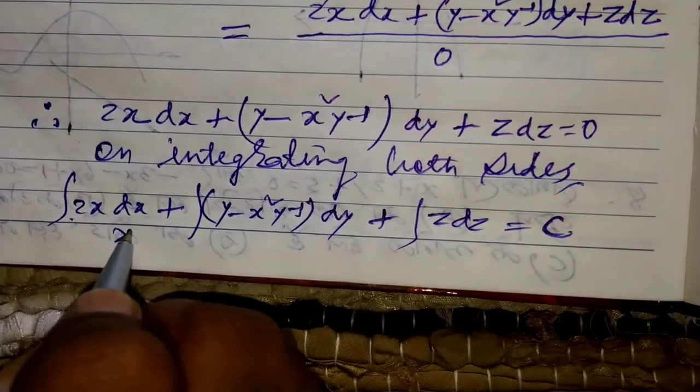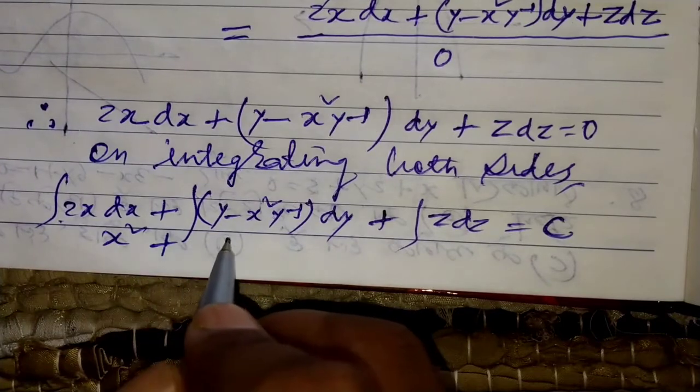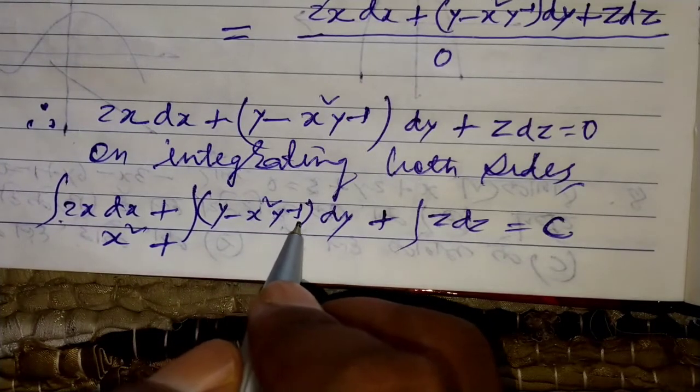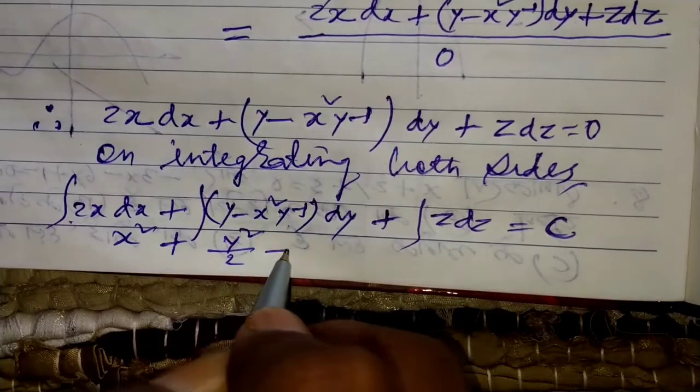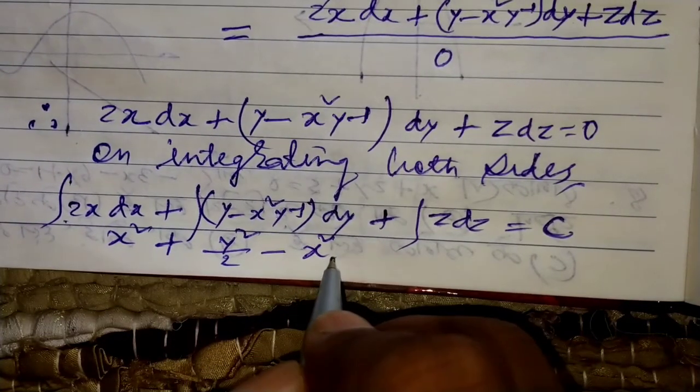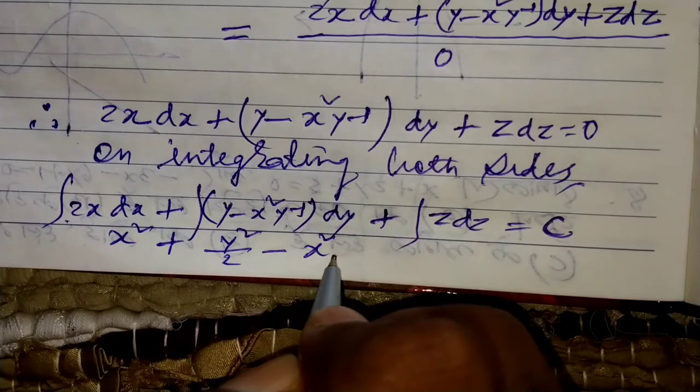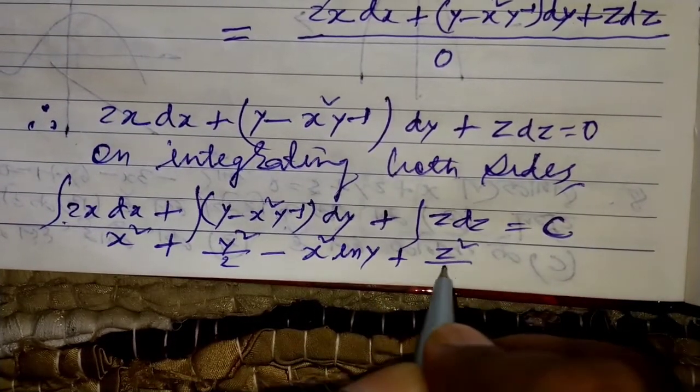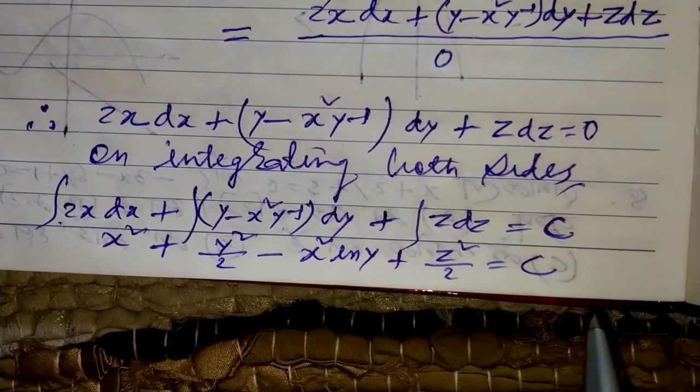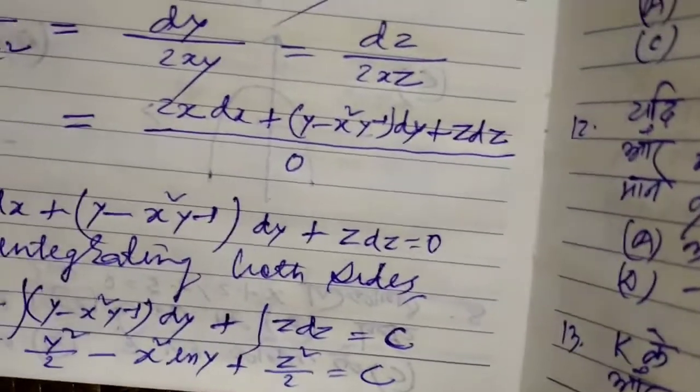Integration 2xdx gives x². Integration (y - x²y⁻¹)dy gives y²/2 - x²ln|y|. Integration zdz gives z²/2. This is equal to c.